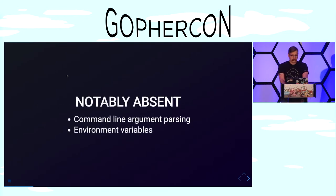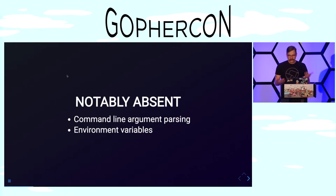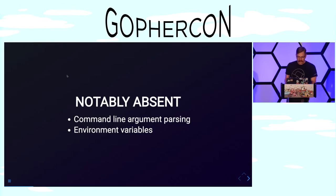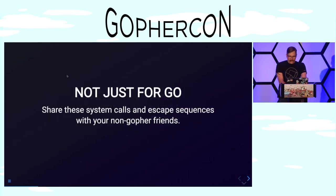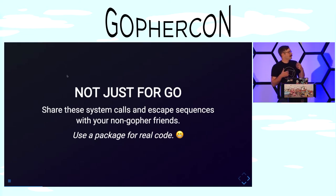Notably absent from this talk is command line argument parsing and environment variables — we'll be looking past the initial execution of a program. But these things are very important; find a good argument or flag parsing library and use it. It's the first place where, when you're building a CLI, you get that contact point with your user. Also, what we'll be looking at isn't just for Go — feel free to share these system calls and escape sequences with your Pythonista and Rubyist friends.